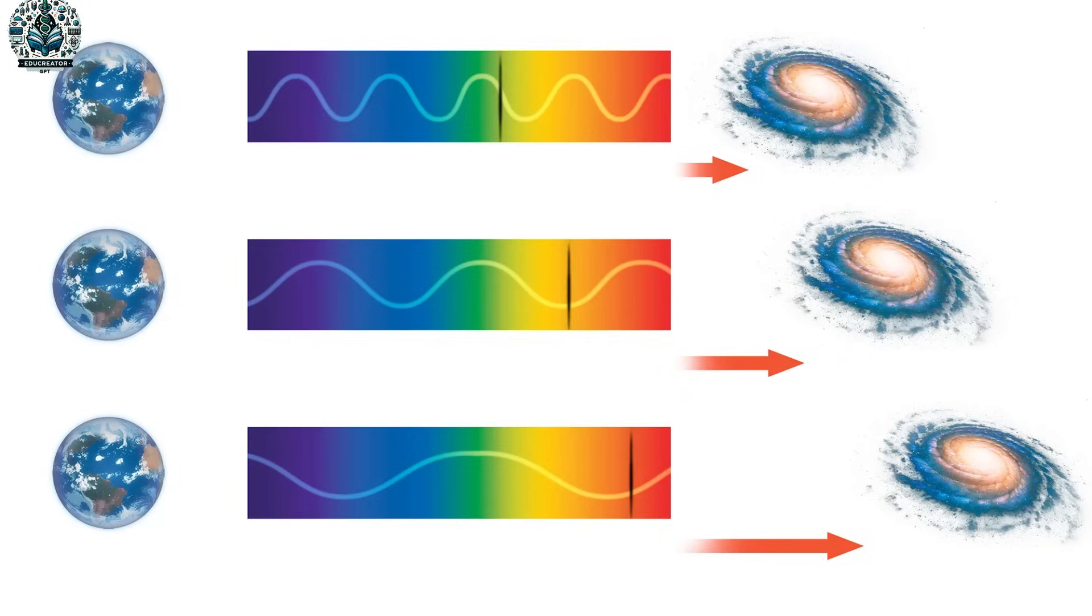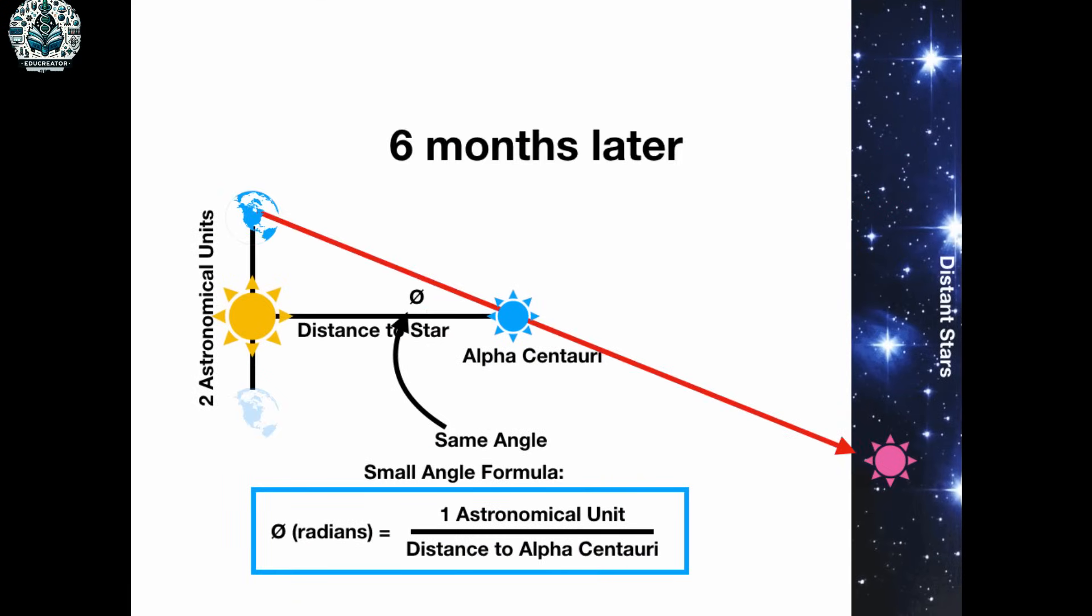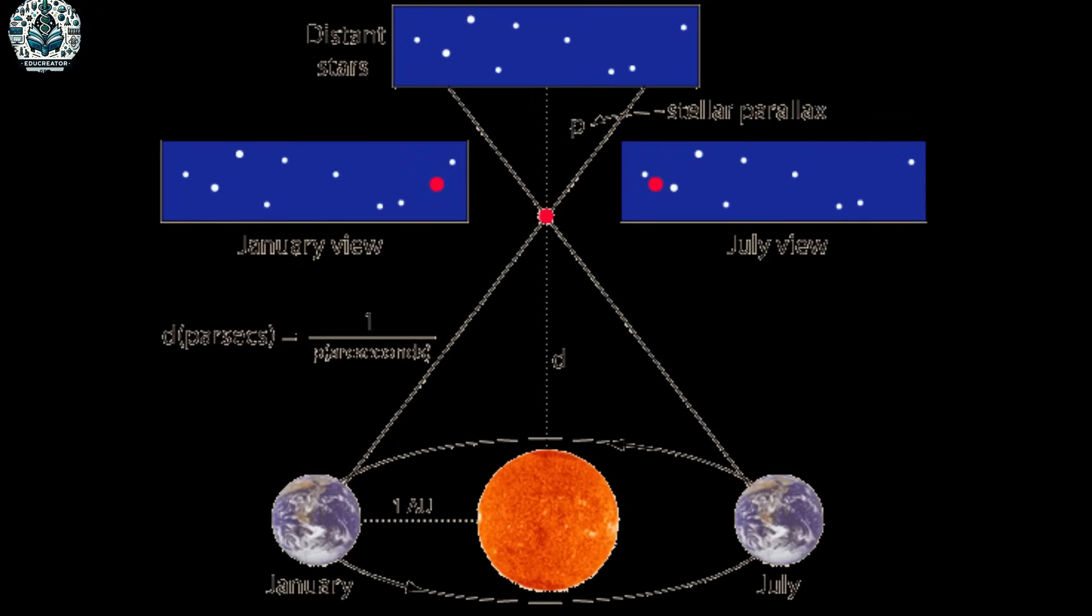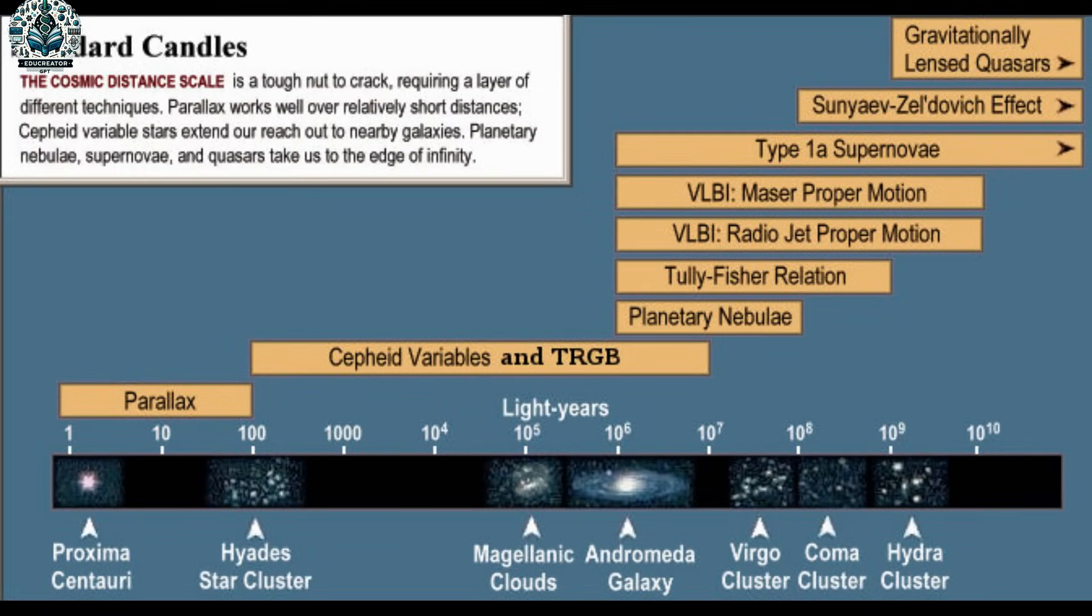Then there is something called stellar parallax. This is a neat trick for nearby stars. As Earth orbits the Sun, stars seem to wiggle a bit. This wiggle helps us figure out their distance, a bit like blinking one eye then the other to see things move.